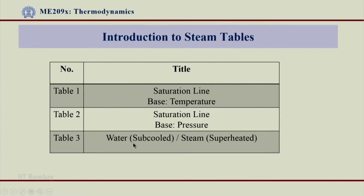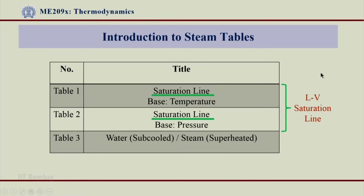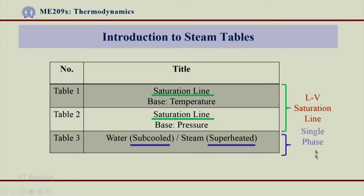Table number 3 deals with the single phase region. The saturation line covers two phases — saturated liquid, saturated vapor, and the liquid plus vapor region — and that is covered by table number 1 and table number 2, spanning from the triple point to the critical point. Table number 3 deals with single phase regions: the subcooled water region on the left side of the LV line, the superheated region on the right side, and even the supercritical region.